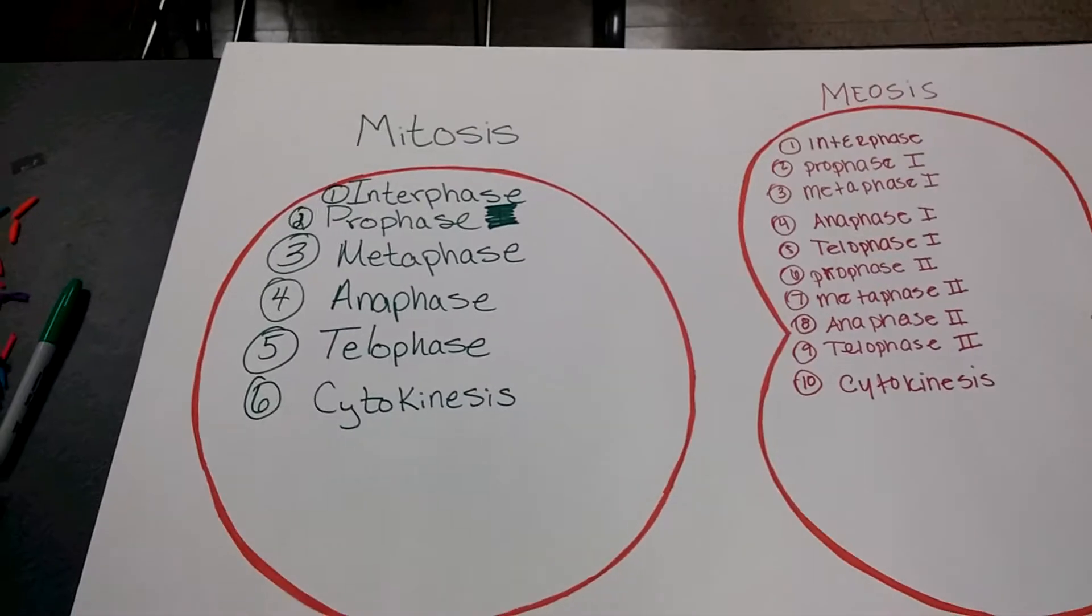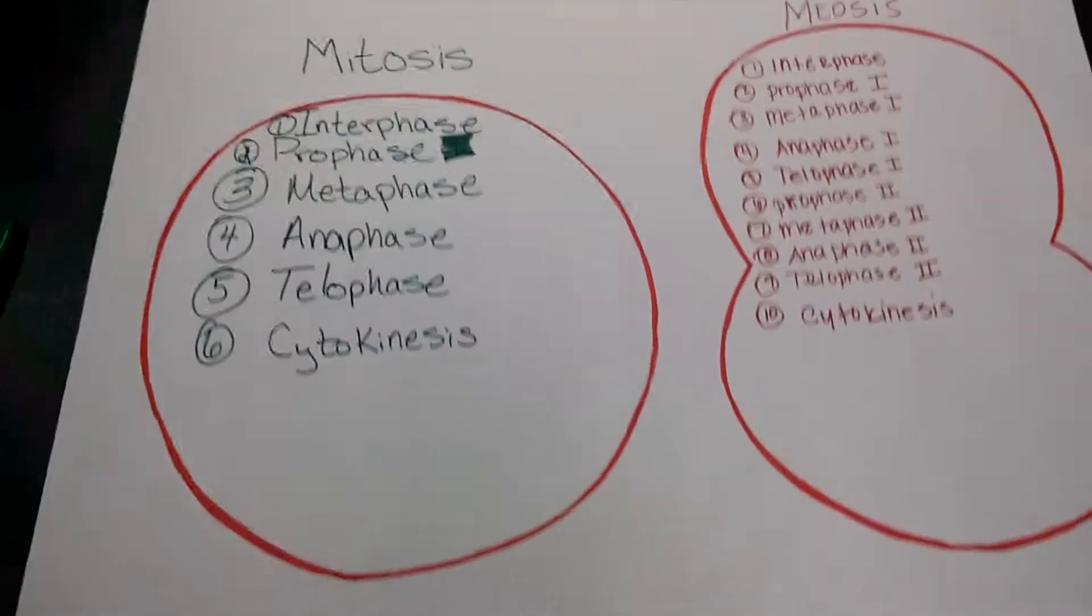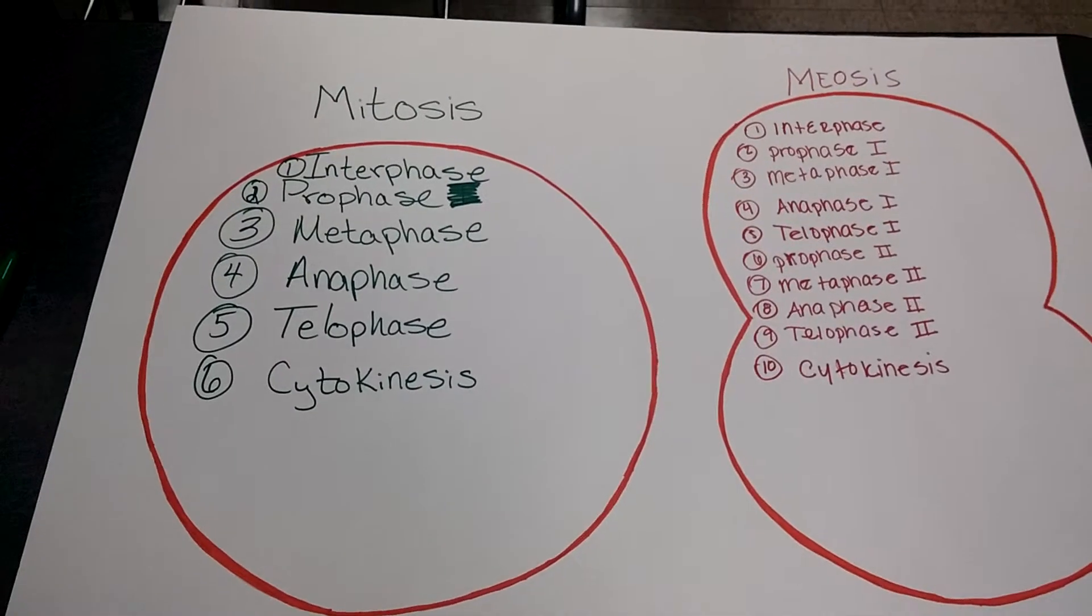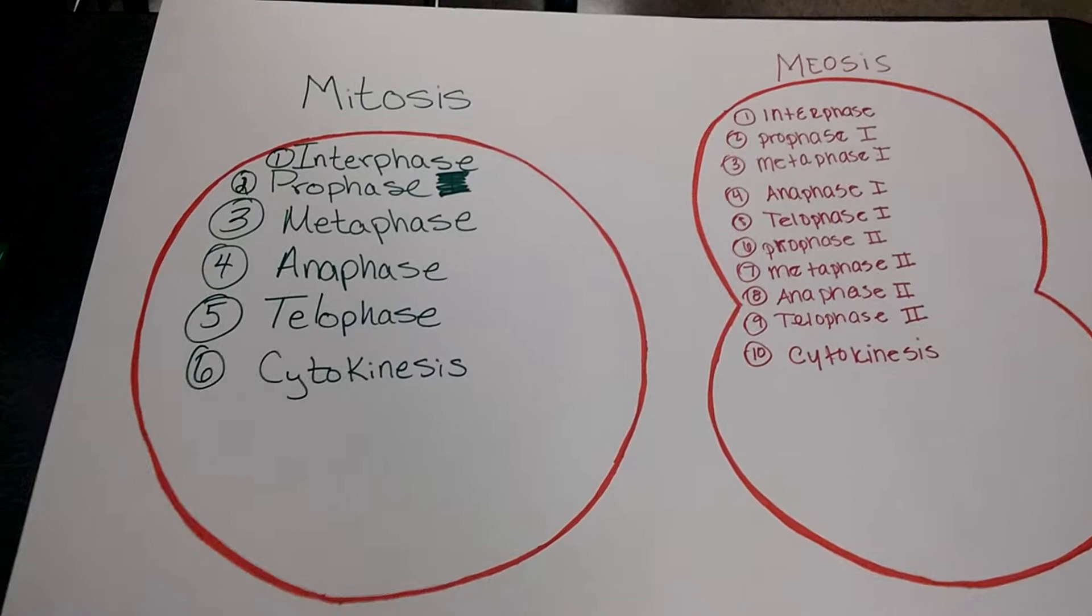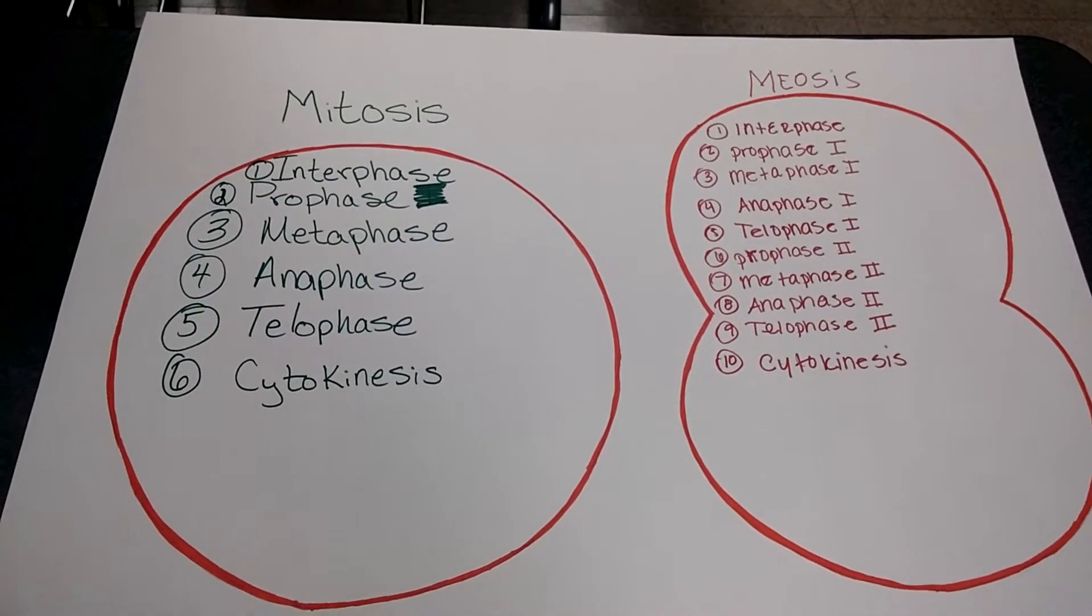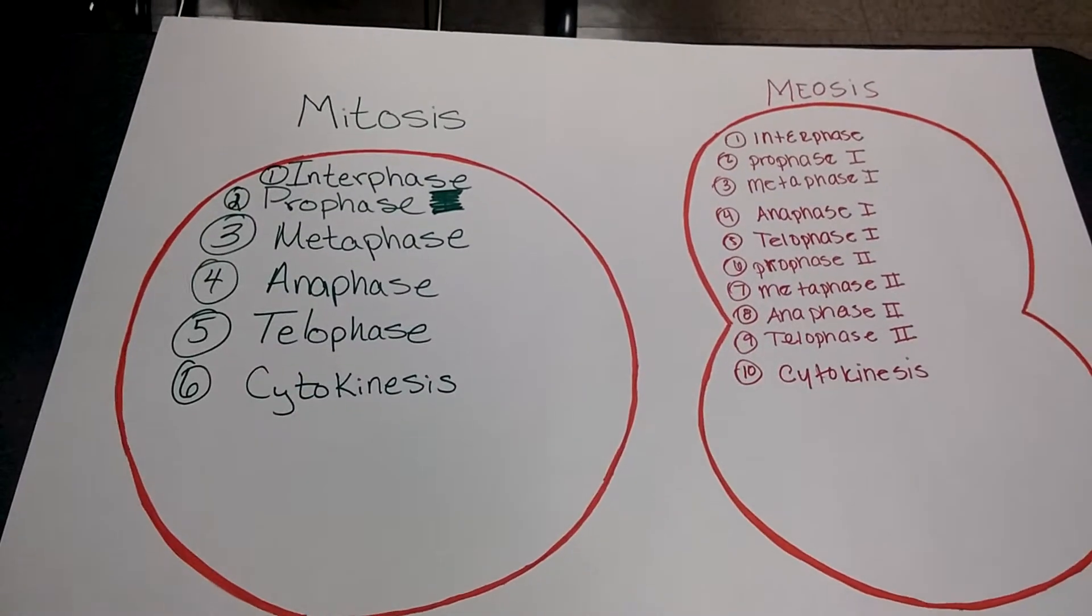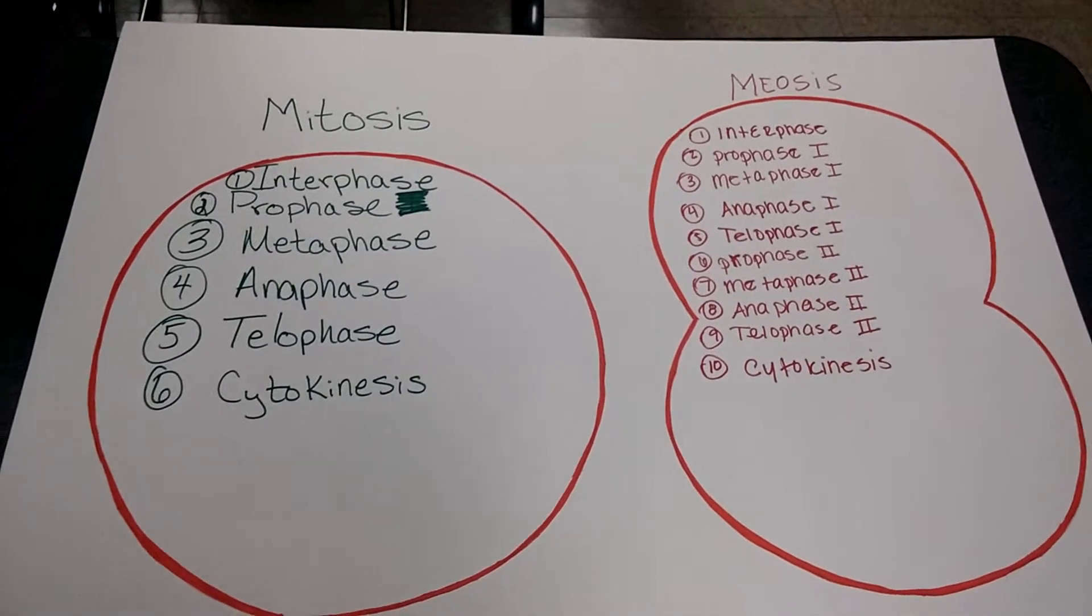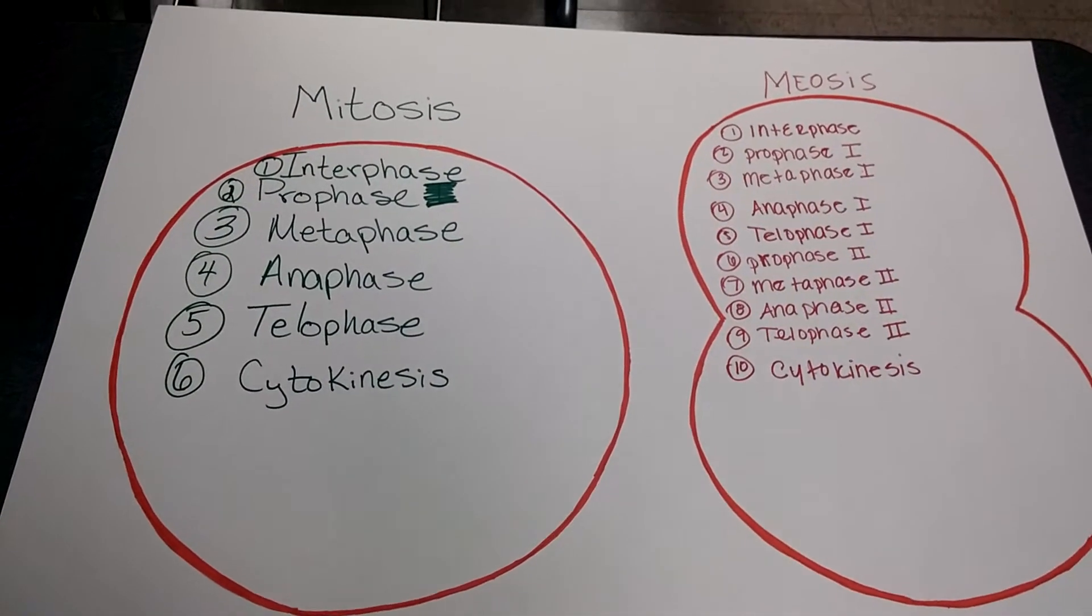Another difference is in mitosis and cytokinesis, the cells break up into two different cells. In meiosis there are two stages of cytokinesis, which results in four cells.